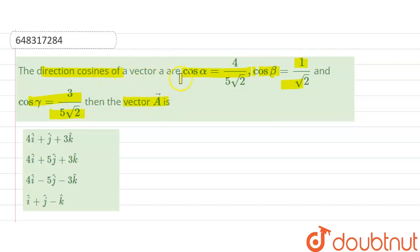We are given direction cosines of vector: cos α, cos β, cos γ. The options are: 4î + ĵ + 3k̂, 4î + 5ĵ + 3k̂, 4î - 5ĵ - 3k̂, and î + ĵ - k̂.